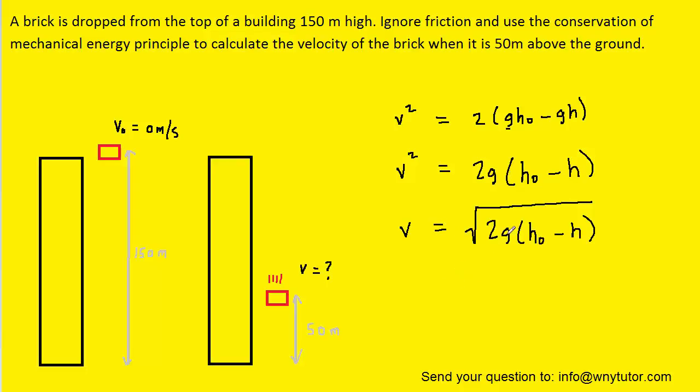And at this point, we can plug in the known values. Let's remember that g is a constant equal to 9.8 meters per second squared. The initial height is shown in the picture to be 150 meters and then the final height is shown to be 50 meters.